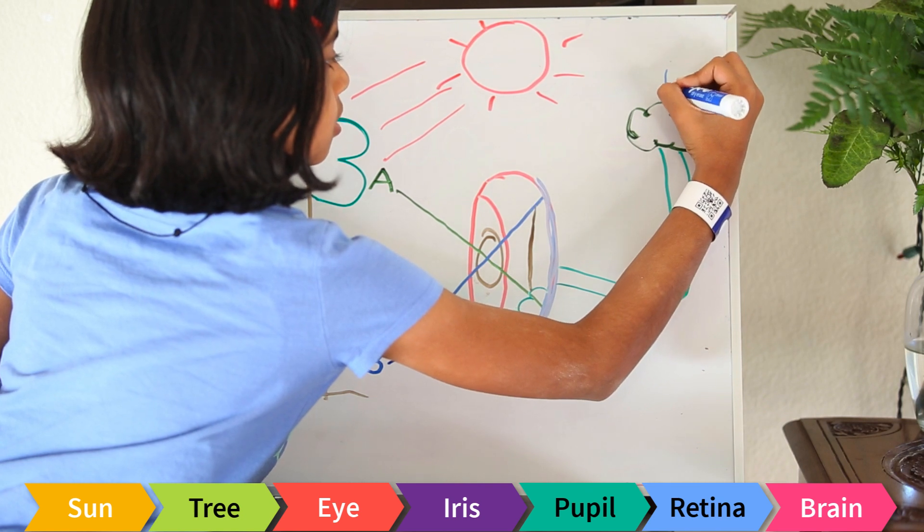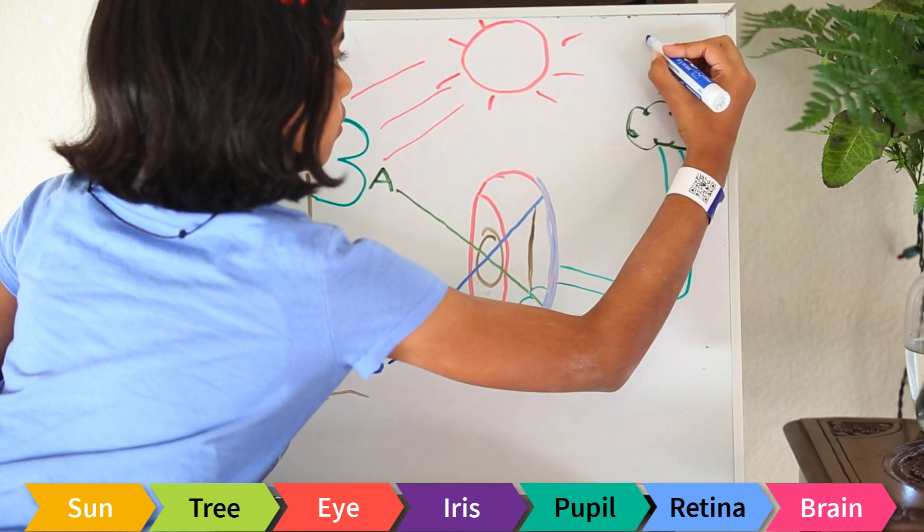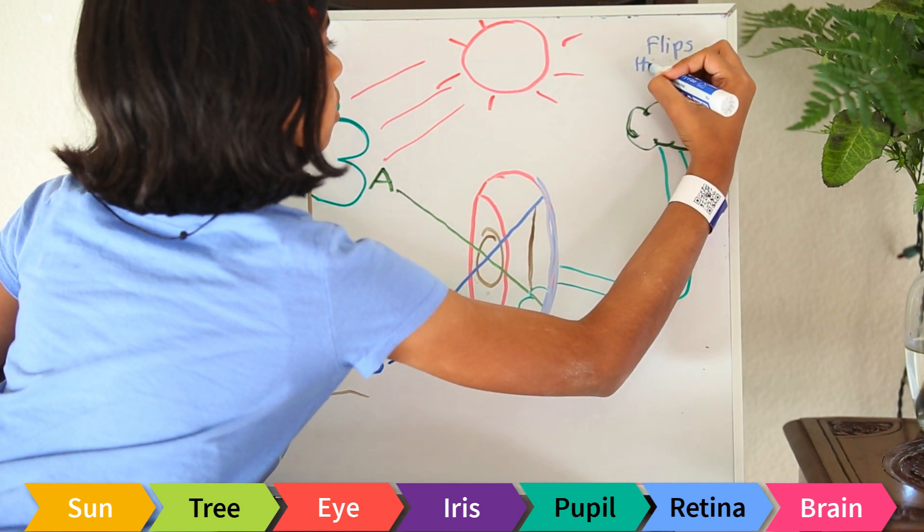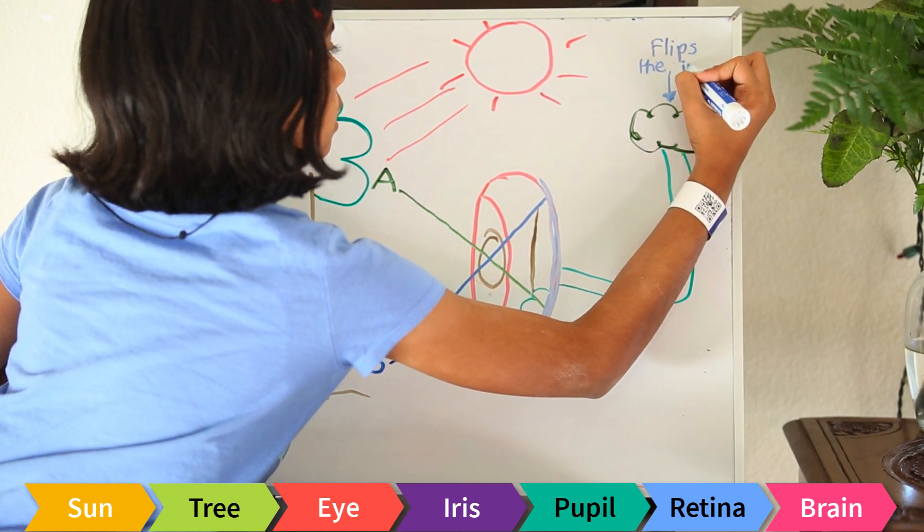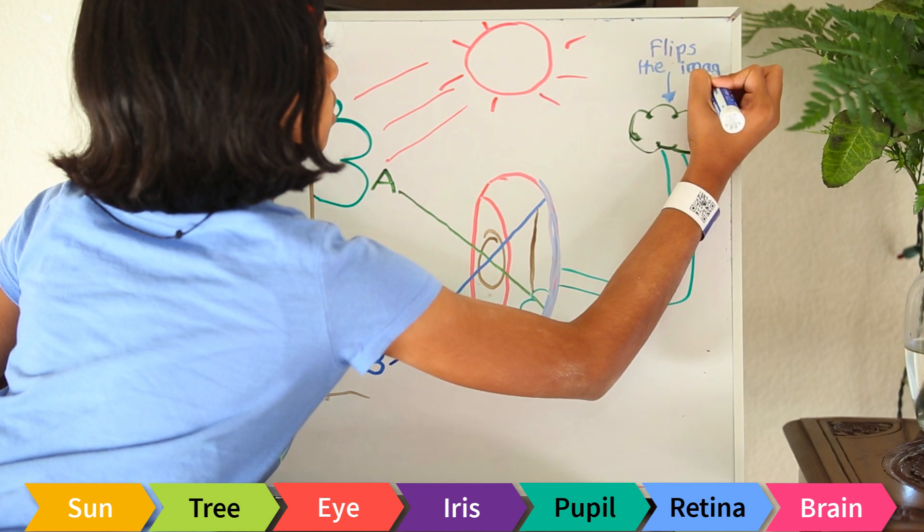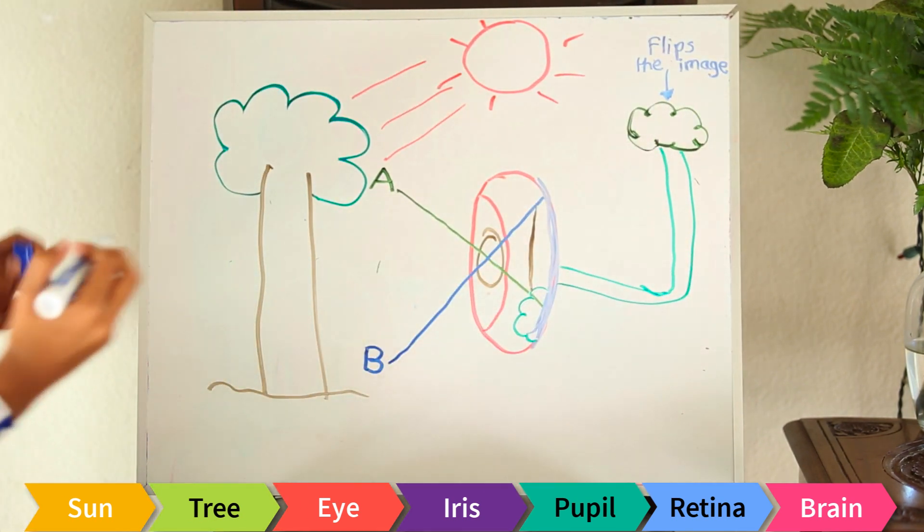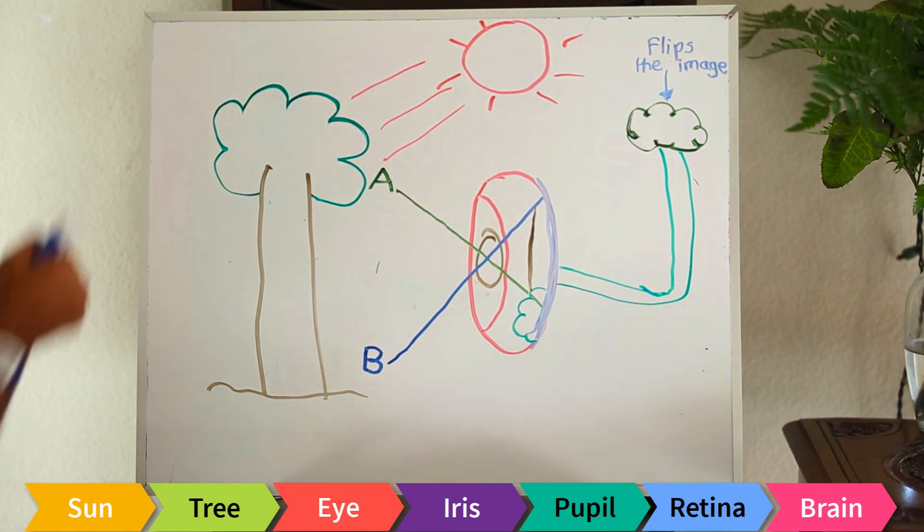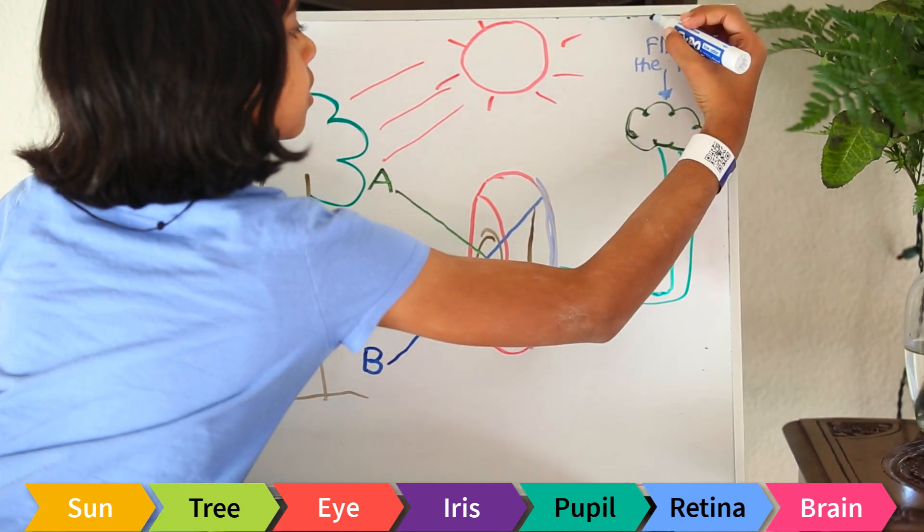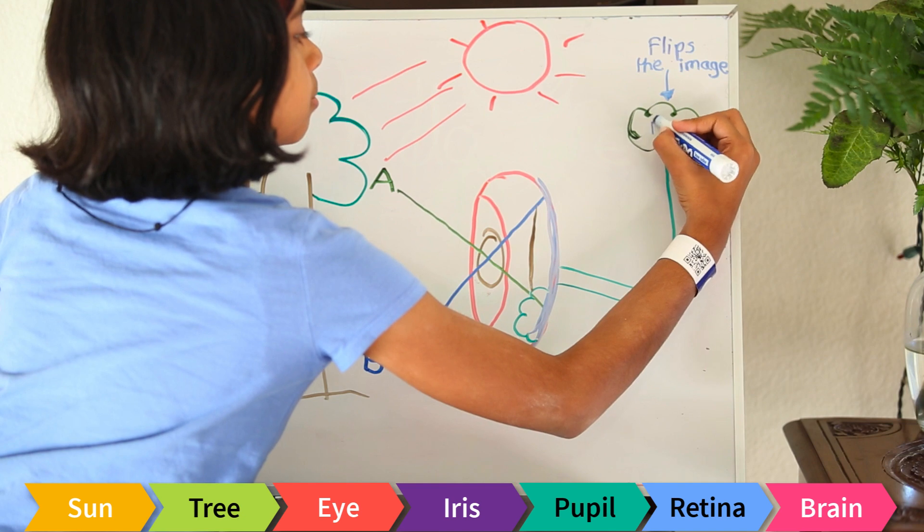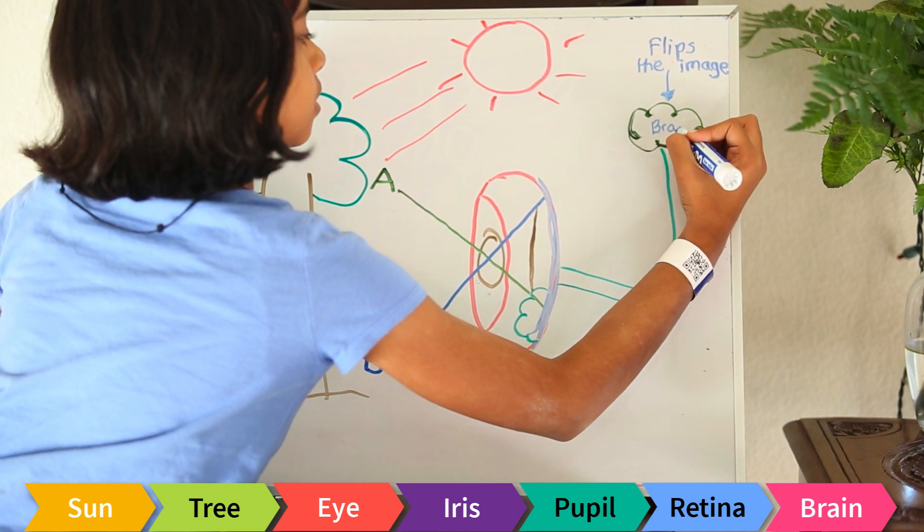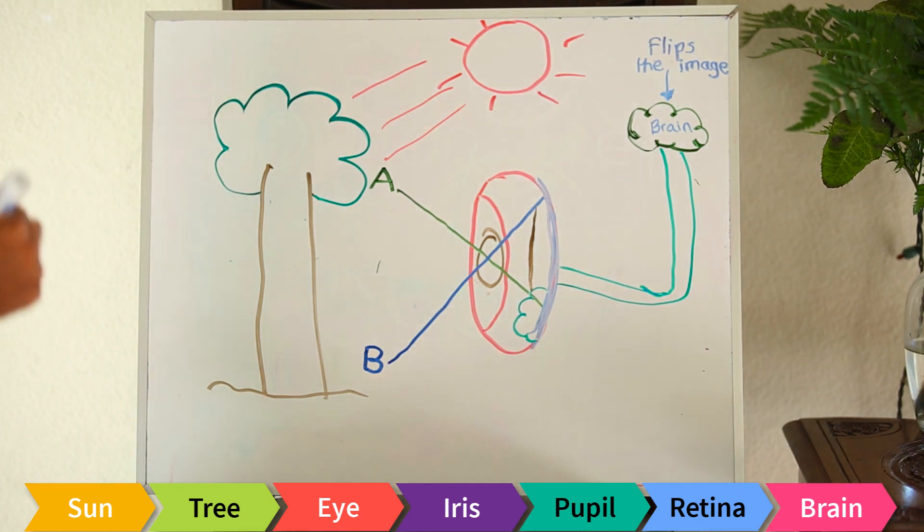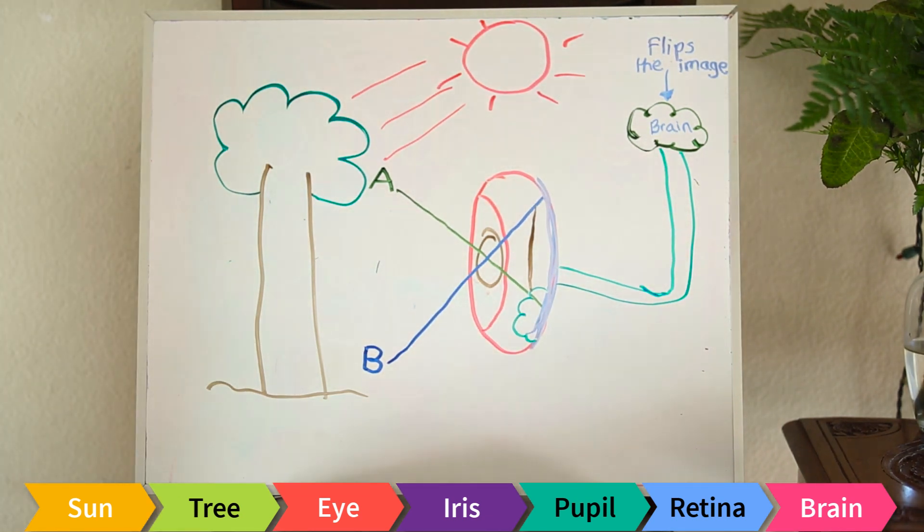Now, the brain flips the image over so you see it clear. Then the brain sends it back to the retina and you can see the image straight.